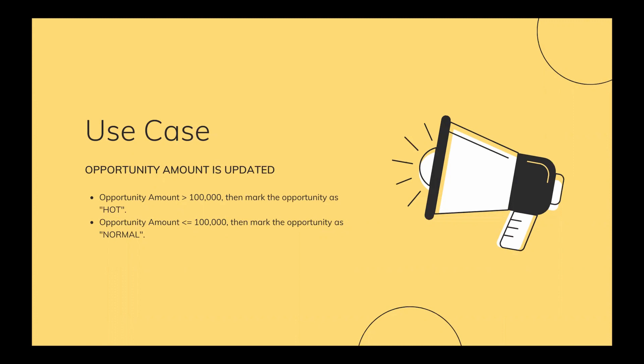The rule is, as you can see on the screen: if the opportunity amount is greater than 100k, then we want to mark that opportunity as hot. If the opportunity amount is less than or equal to 100k, then we want to mark that opportunity as normal. We will be using this new flow feature to implement this use case.